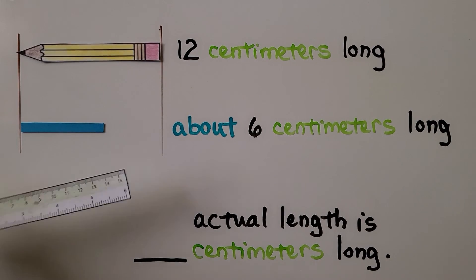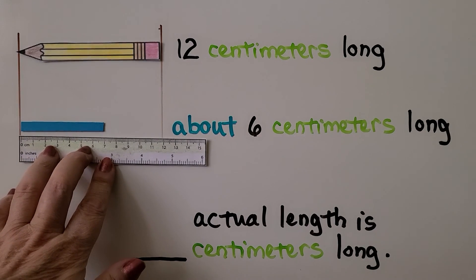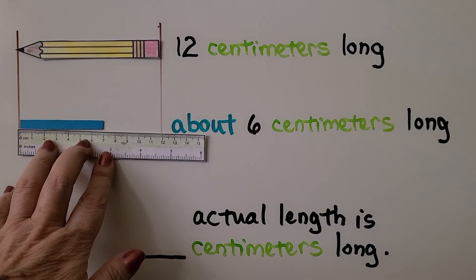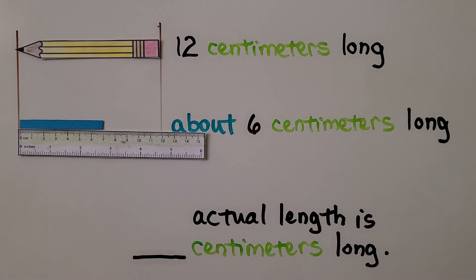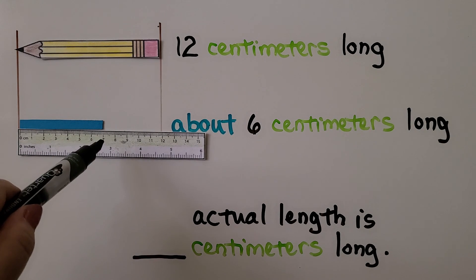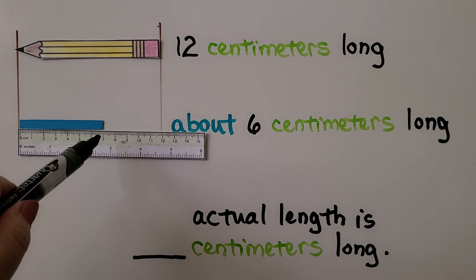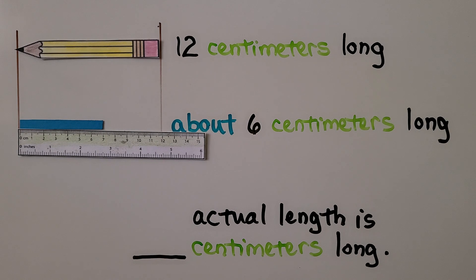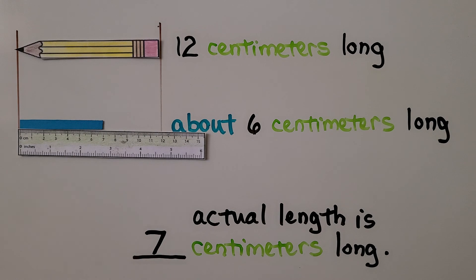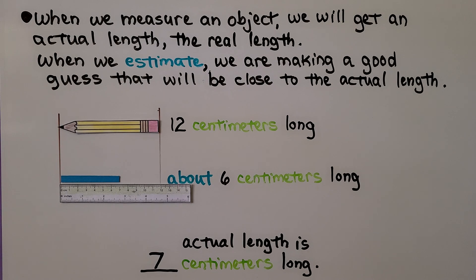We take our centimeter ruler, line up the left side with zero, and you can see it's actually 7 centimeters. Our estimate of 6 centimeters was a good guess that was close to the actual length, but the actual length is 7 centimeters. Remember, an estimate is just a good guess — it's not an actual real measure.